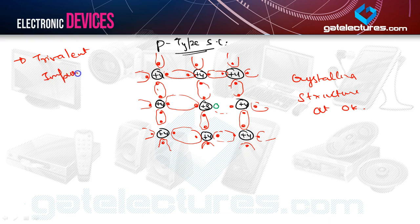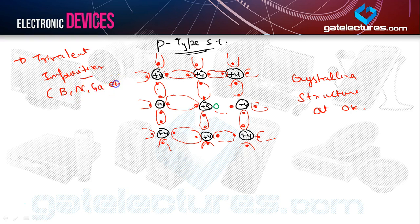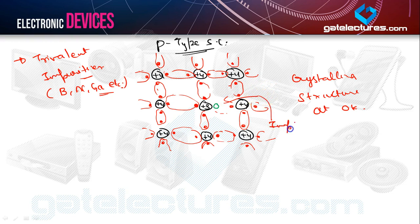Trivalent impurities like boron, aluminum, gallium, etc. are added. They have three electrons in their outermost shell. Since there are only three electrons in their octet, there is a deficiency of one electron, shown in green. The deficiency or absence of an electron is referred to as a hole, and this leads to an incomplete covalent bond. At 0 Kelvin, the P-type semiconductor acts as an insulator.